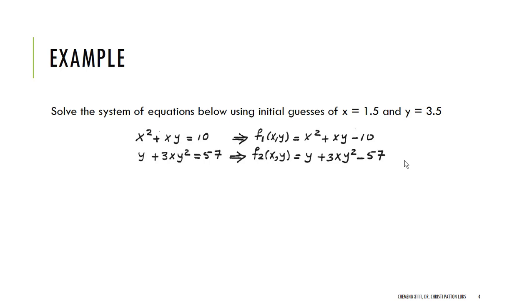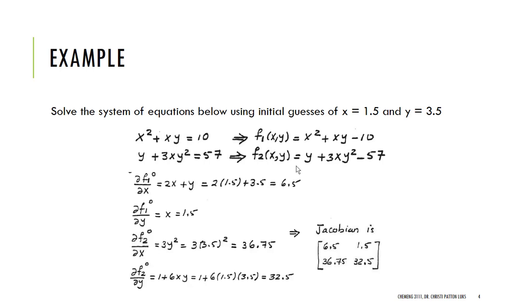Next, we need to take partial derivatives. So the partial derivative of f1 with respect to x is 2x plus y. The derivative with respect to y will be just x. And I'm going to evaluate each of those at my guess. We'll do the same for the second. So those answers are shown here. So the derivative of f1 with respect to x evaluated at our first guess gives me 6.5. The derivative with respect to y is 1.5. And that gives me my first row of my Jacobian matrix.